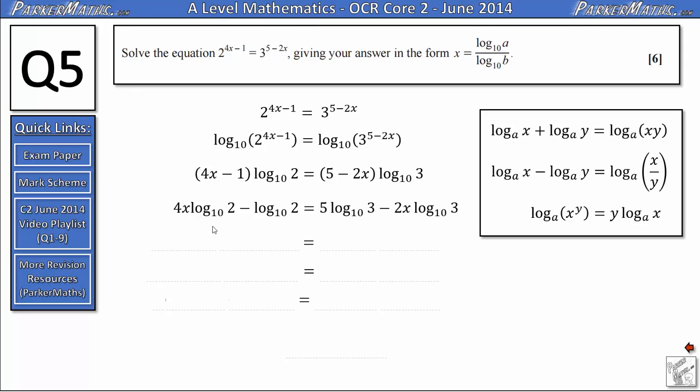For the next line, I'm going to get all of the terms involving x onto the left hand side and all of the terms not involving x onto the right hand side. So I'm going to keep the 4x log 2 over here. And to get the 2x log 3 onto the other side, I'm going to add it to both sides, meaning it won't be on this side anymore. But on this side, it'll be plus 2x log 10 of 3. On the right hand side, I'll still have the 5 log 3, but I'm also going to add log 2 to both sides to get log 2 on this side.